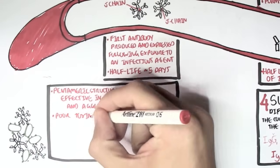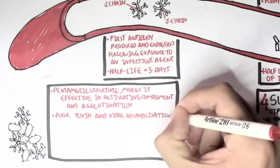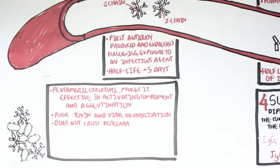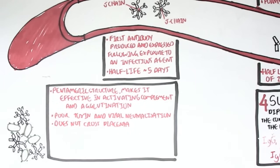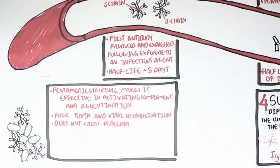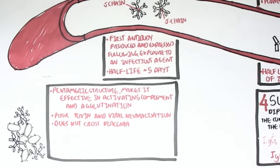However, IgM has poor toxin and viral neutralization. And it does not cross the placenta. Because remember, IgG is the only antibody that crosses a placenta. But even though IgG is the only antibody that crosses a placenta,